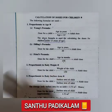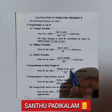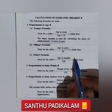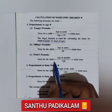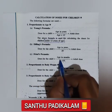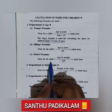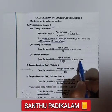For infants — first month, second month, third month, fourth month babies — to calculate the medicine dose, we use Fried's formula. The dose for a child is equal to age in months divided by 150, into adult dose.